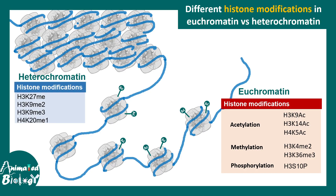Heterochromatin regions are often associated with methylation marks such as H3K27 dimethylation or monomethylation and H4K20 monomethylation. The histone marks at euchromatin and heterochromatin regions are broadly different, and all these marks dictate how tightly the chromatin is wrapped. Acetylation, for example, results in loosely packed chromatin that is accessible to many factors.